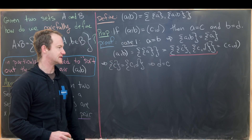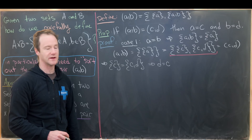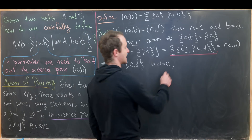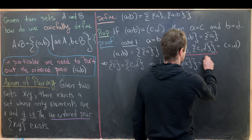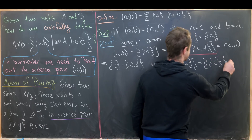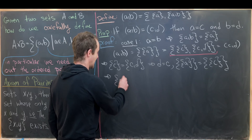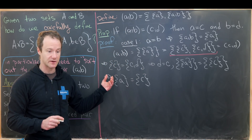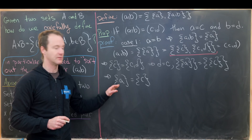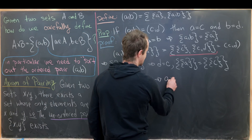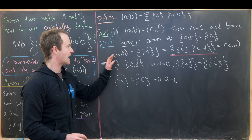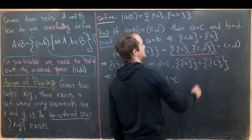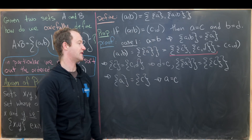Now we have a equal to b and c equal to d. We just need one more equality to finish. Rewriting using d equal to c gives us: the set containing {a} equals the set containing {c}. But that means {a} equals {c}, since both are singletons and equal to each other, meaning each element must be equal. Applying that once more, a equals c. So we have a equals b equals c equals d — all equal. This is certainly a special case of a equals c and b equals d, completing case one.